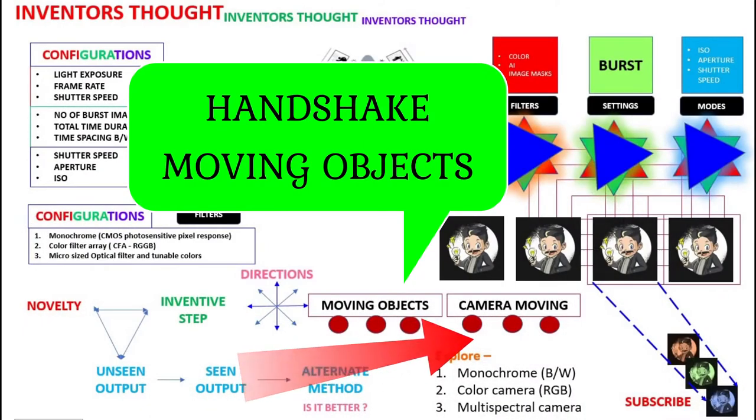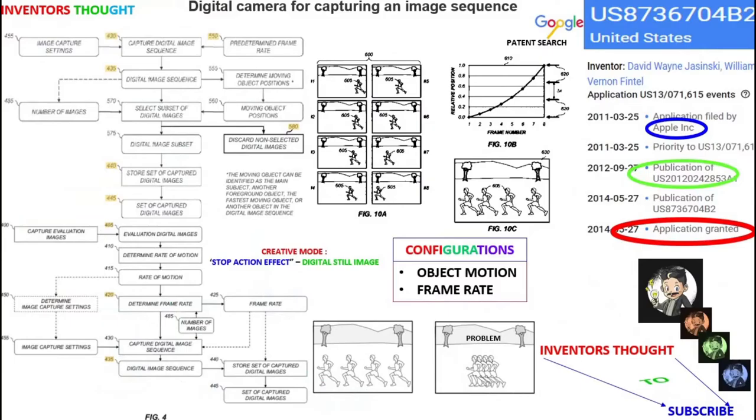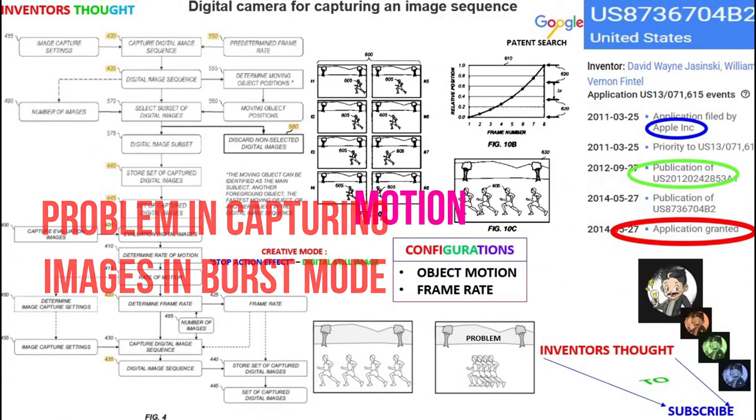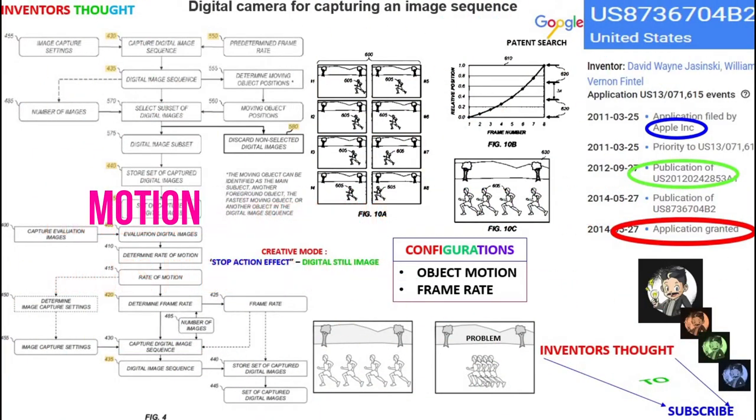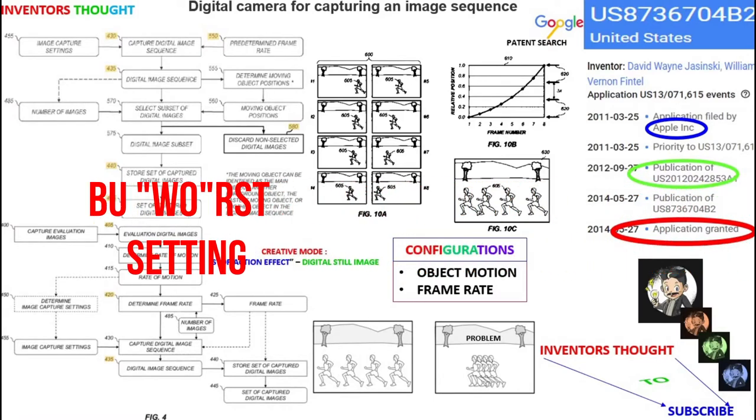Movement of object or camera is possible in the burst mode. Invention shown here solves image capturing problem in the burst mode. The first problem stated is indeterministic motion of an object. User may not be able to remember about tuning the camera setting for the burst mode.